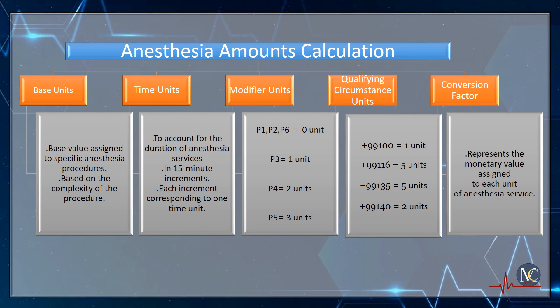Modifier units may be assigned when specific modifiers are used to describe additional circumstances or conditions affecting anesthesia administration. These modifiers include physical status modifiers P1 through P6. Modifier units are added to base units and time units to adjust the anesthesia fee accordingly. Physical status modifiers P1, P2, and P6 have a 0 unit value; P3 has 1 unit value; P4 has 2 unit value; and P5 has 3 unit value.